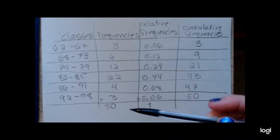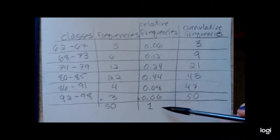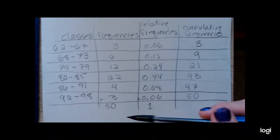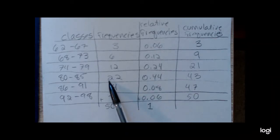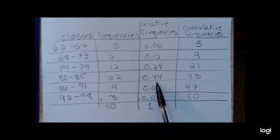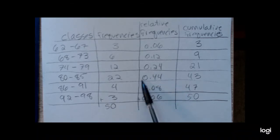Now, I could easily use the relative frequencies instead of the frequencies. It would not change the look of the histogram. You notice here the tallest bar is going to be 22 if I use frequencies. That would also be the case if I used relative frequencies. The tallest bar would be for this class because this has the greatest relative frequency.